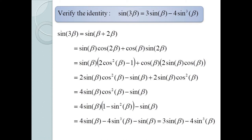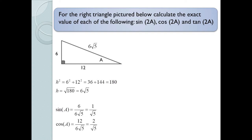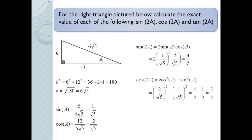Here's a problem where we're given a right triangle describing an angle A, with legs 6 and 12, and asked to find trig functions at 2A. The hypotenuse is √(6² + 12²) = √180 = 6√5. So sin A = 6/(6√5) = 1/√5 and cos A = 12/(6√5) = 2/√5. Then sin(2A) = 2 sin A cos A = 2·(1/√5)·(2/√5) = 4/5, cos(2A) = cos²A − sin²A = 4/5 − 1/5 = 3/5, and tan(2A) = sin(2A)/cos(2A) = (4/5)/(3/5) = 4/3.